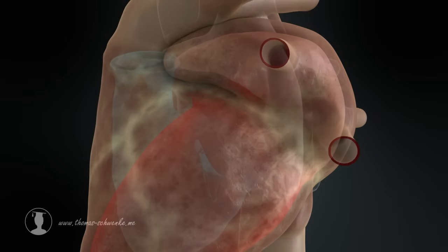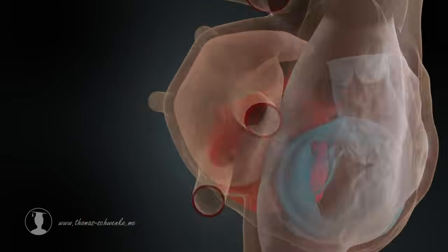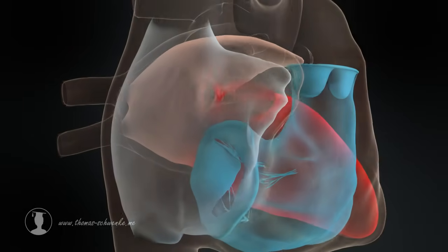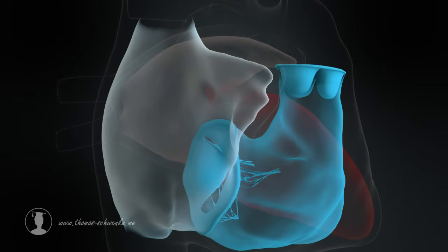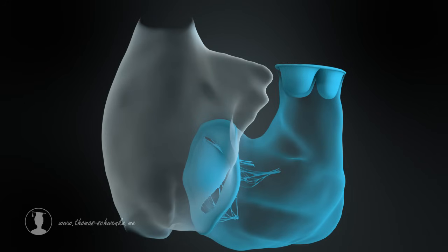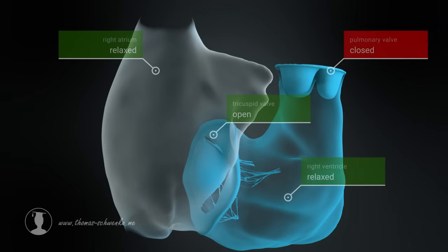As we have previously only shown a simplified cardiac cycle, we will now take a look at the actual process showing the right side of the heart. The muscles of the atrium and ventricle are relaxed. The tricuspid valve is open. The pulmonary artery is closed through the pulmonary valve.